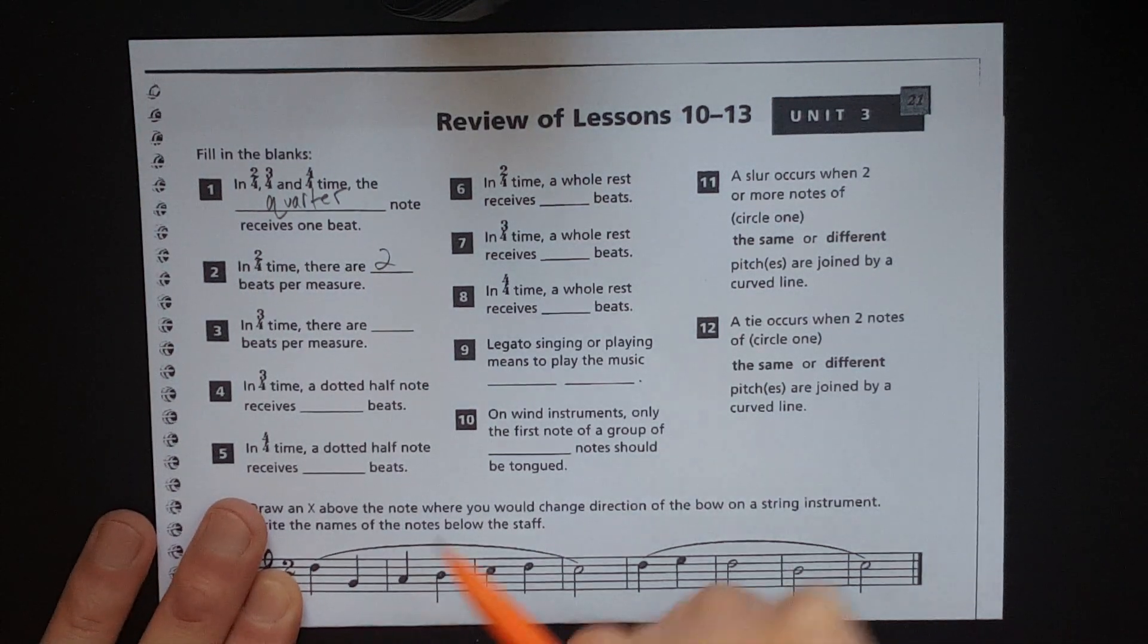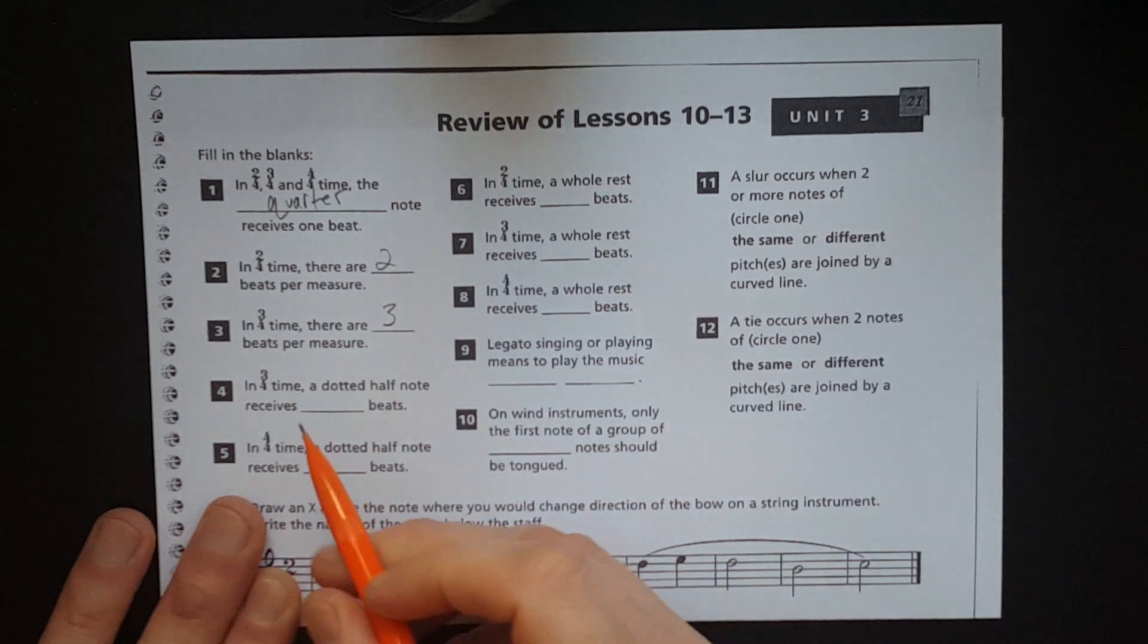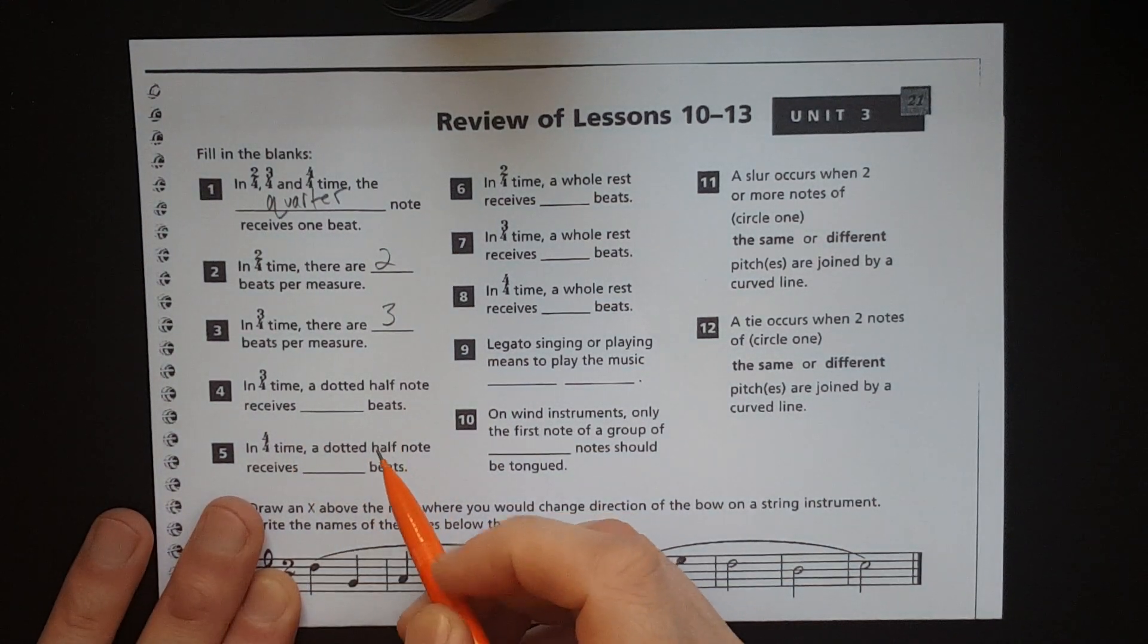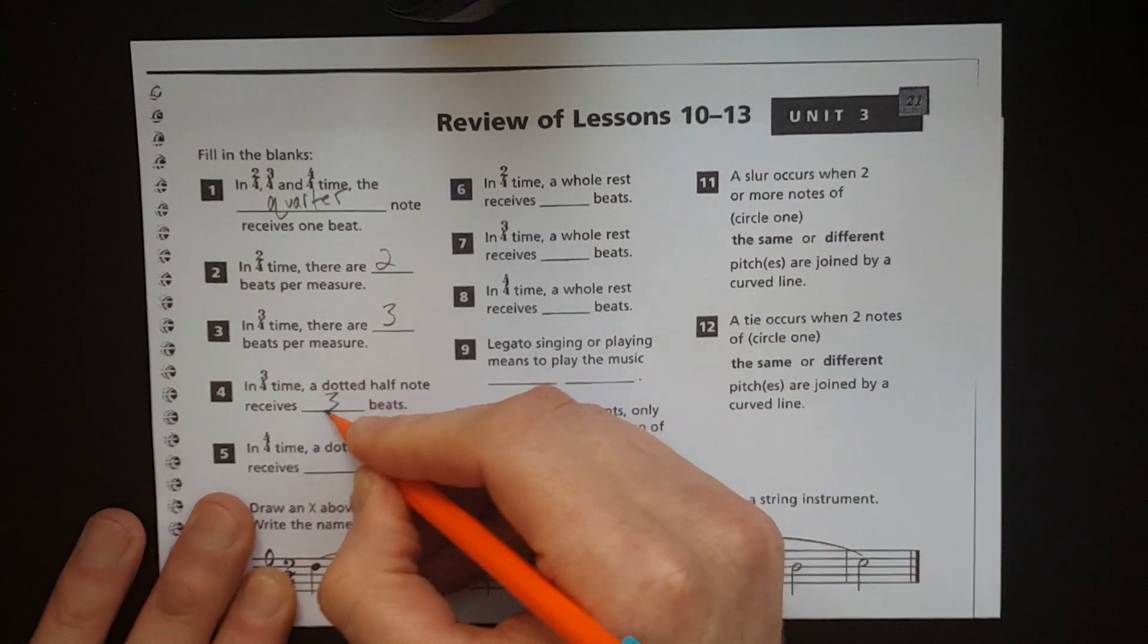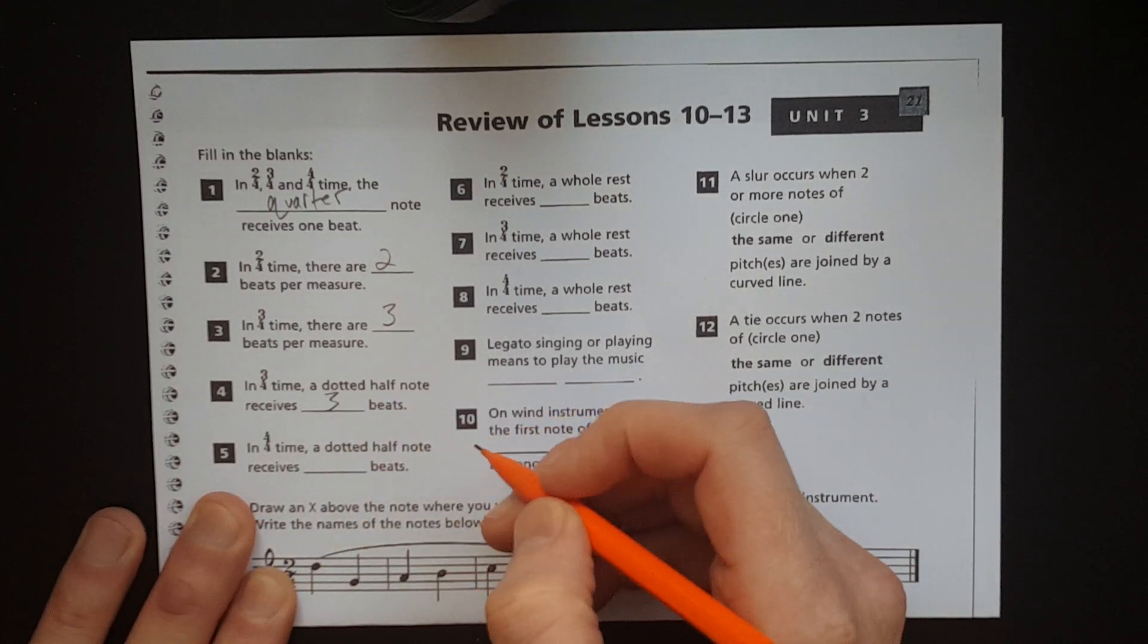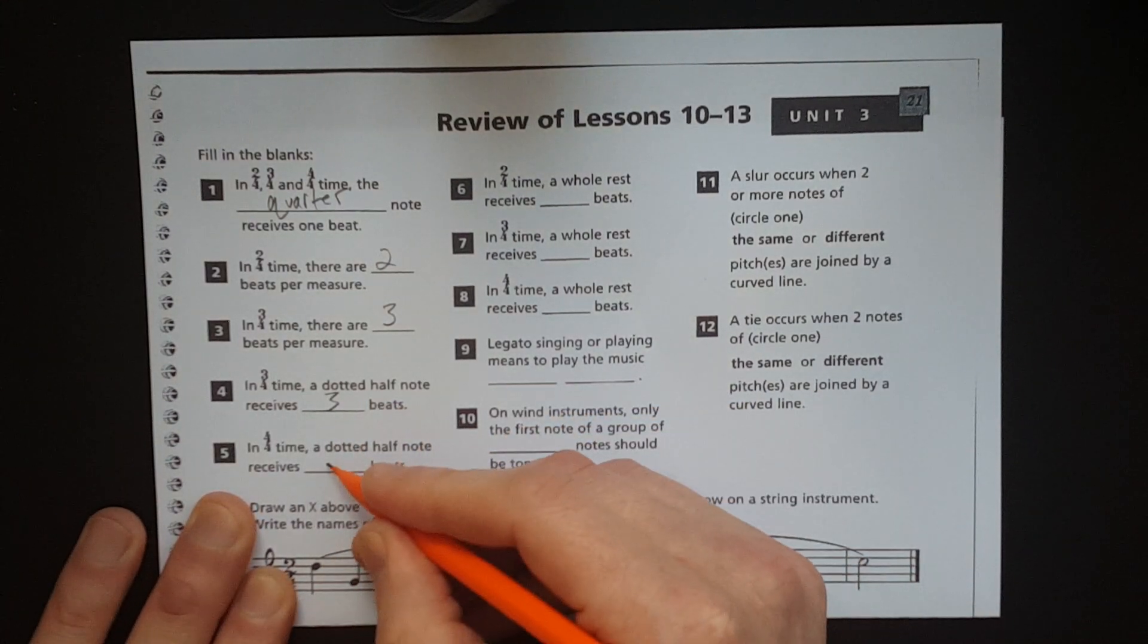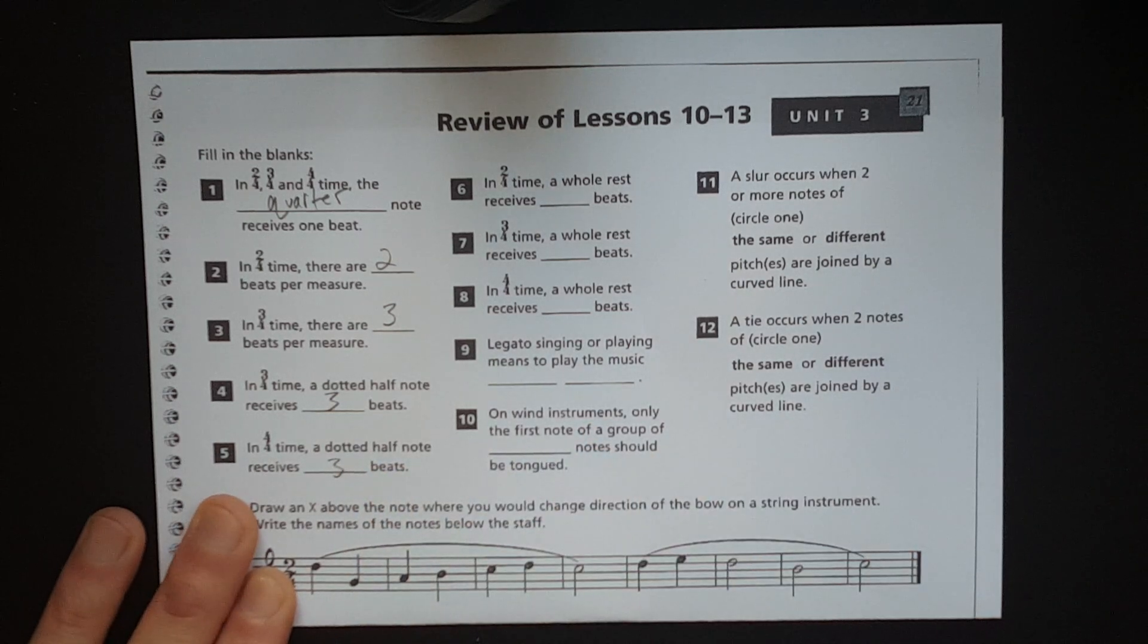In 3-4 time, there are three beats per measure. In 3-4 time, a dotted half note receives three beats. And in 4-4 time, the dotted half note still receives three beats. Doesn't matter what time signature you are in, the dotted half note receives three beats.